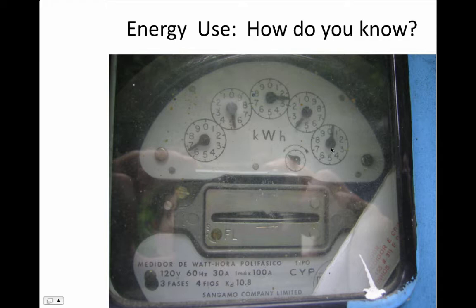This little disc spins, and the rate at which it spins tells you the rate at which you're using energy right at that point in time — the power being used by the house. And these dials tell you the total quantity of energy you've used from one point to another. You would read this one day and then read it again the same time the next day to see how much energy you'd used in those 24 hours. This is a very 1920s kind of device.